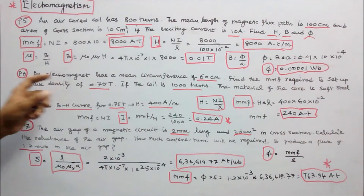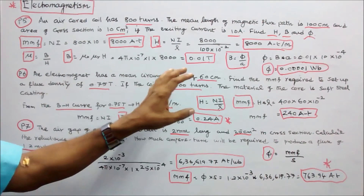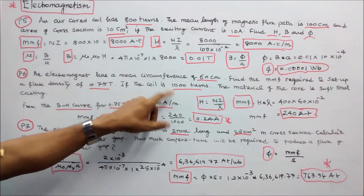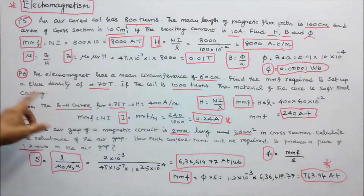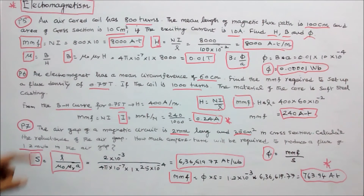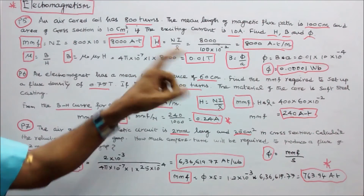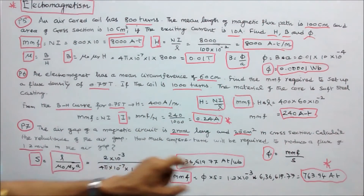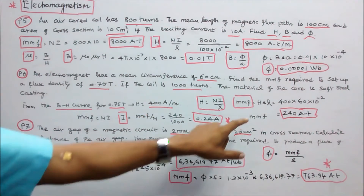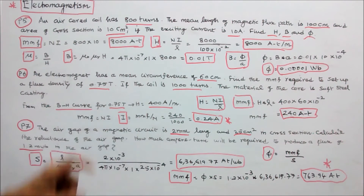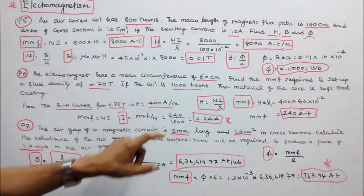Problem number 6. An electromagnet has a mean circumference of 60 cm. Find the MMF required to set up a flux density of 0.75 tesla. The coil has 1000 turns and the core material is soft steel casting. From the BH curve for 0.75 tesla, H equals 400 amps per meter. MMF equals H into L: 400 into 60 into 10 power minus 2 equals 240 ampere turns. Since MMF equals N into I, current I equals MMF divided by N: 240 divided by 1000 equals 0.24 amps.